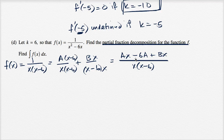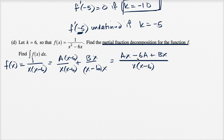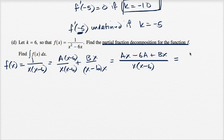If this looks completely foreign to you, I encourage you to watch the videos on Khan Academy on partial fraction decomposition. What we want to do is solve for a and b. These numerators have to add up to one, since the original numerator is one over x times x minus six.